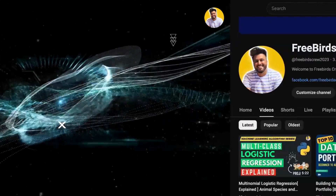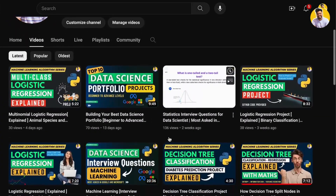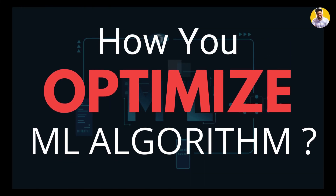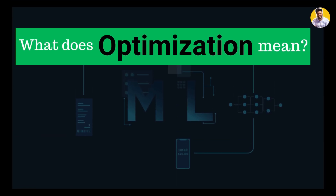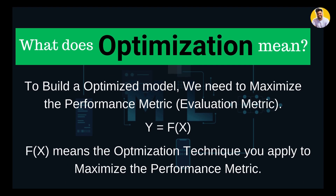Hello guys and welcome to FreeBirdsQ. The question comes: how do you optimize your machine learning algorithms? Let's first decide what optimization actually means. Optimization means we can maximize the performance metrics — that is, the evaluation metrics of a machine learning model — so that our evaluation metrics should be as high as possible.